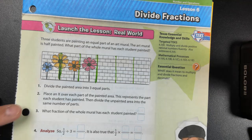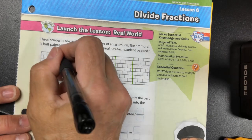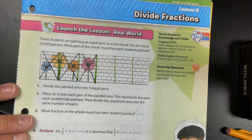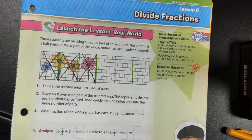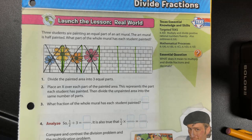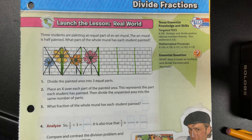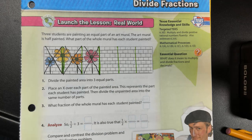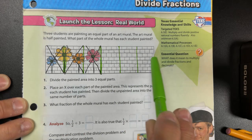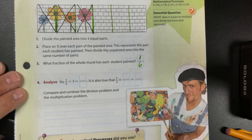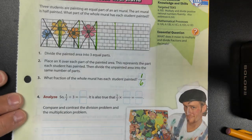It says place an X over each part of the painted area. There's one, there's two, and there's three. This represents the part each student painted. It also says divide the unpainted part into the same number of parts — we've already done that. So what fraction of the whole mural has each student painted? If one student painted one part, that's one out of how many total parts: one, two, three, four, five, six.